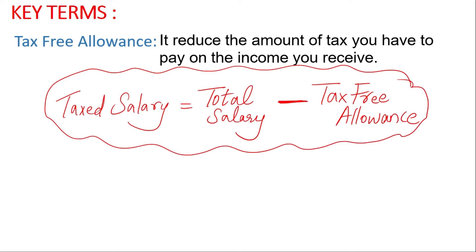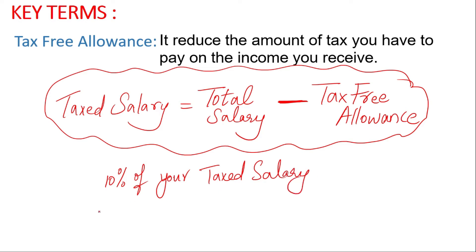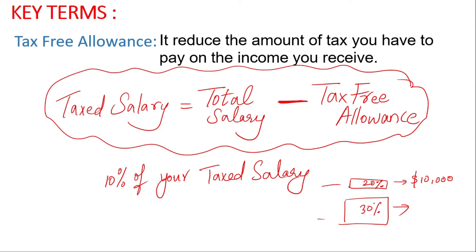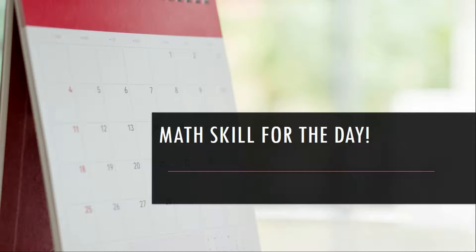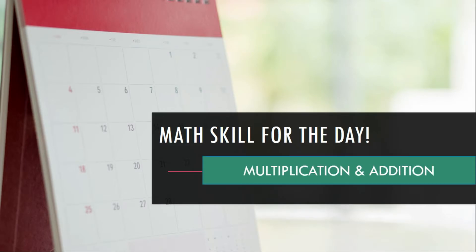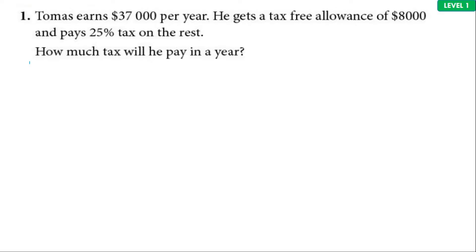There is always a percentage that is being set. It can be 10% of your taxed salary that you have to pay. Or it can be slabs — for the first $10,000 maybe you pay 20%, and for the remaining money you pay at 30%. So you have different slabs at which you pay your tax. It depends on the question. The math skills for the day are just multiplication and addition, and of course you have your calculator.